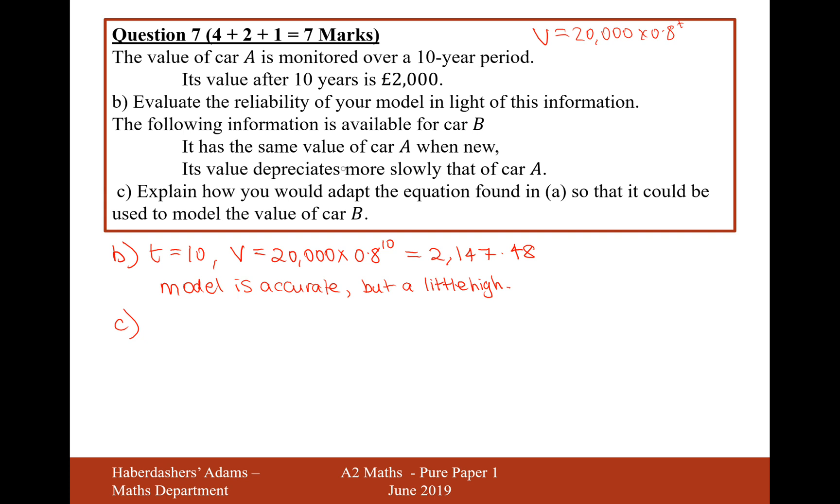Well, if it's depreciating more slowly, then the decimal multiplier is not going to be 0.8. The decimal multiplier, the value of 0.8, will be slightly higher.